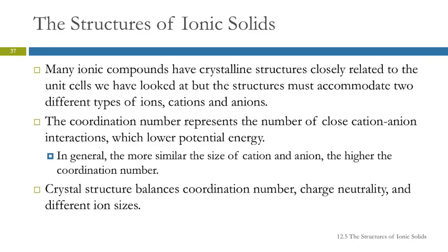Structures of Ionic Solids. Many ionic compounds have crystalline structures very similar to the unit cells we've been looking at. The difference is that when you have an ionic compound, you have two different types of ions — a cation and an anion. That changes up those unit cells a little bit, because the cells we were looking at had all spheres the same, and in an ionic compound that's not true.